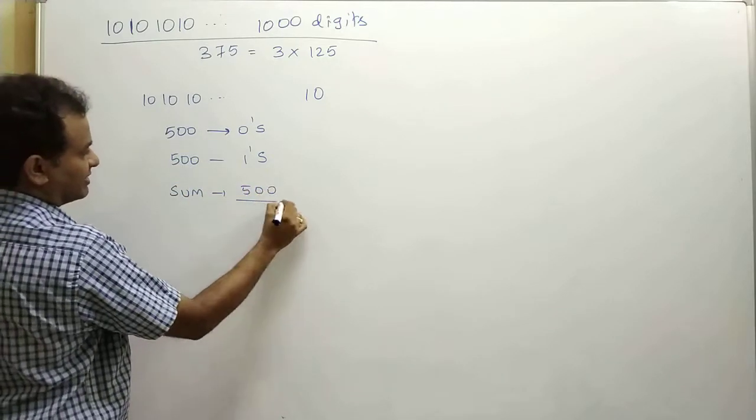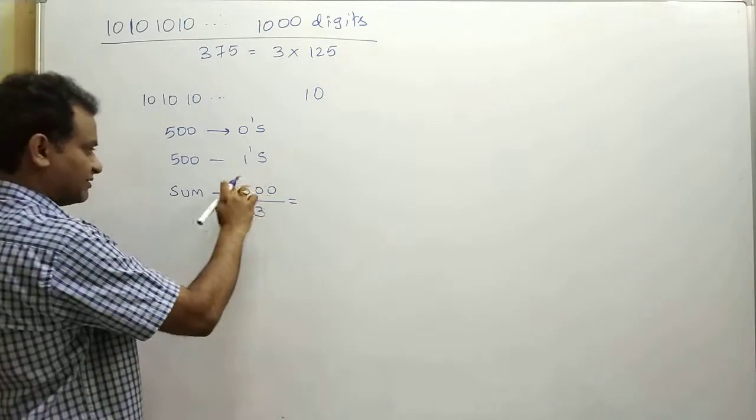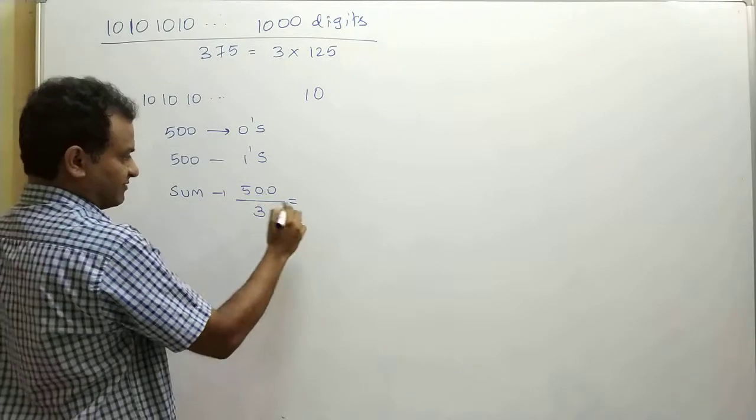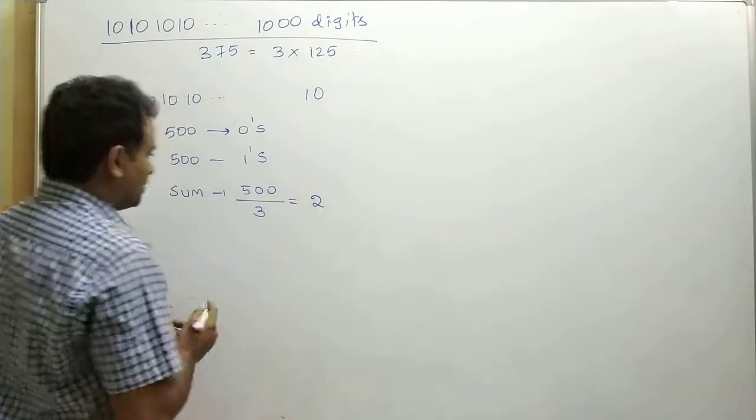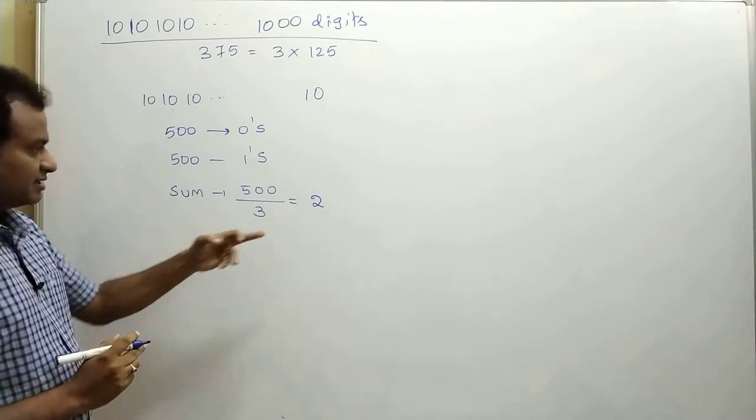Out of these 1000 digits, there are total 500 zeros and 500 ones. Therefore, sum of all the digits must be equal to 500. When 500 is divisible by 3, we add all the three digits, which is 5. 5 divided by 3 gives you 2. Therefore, when this expression is divisible by 3, the remainder is 2.